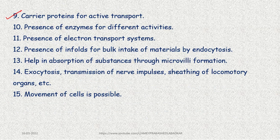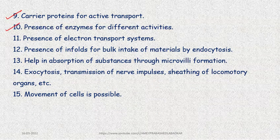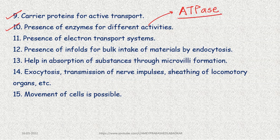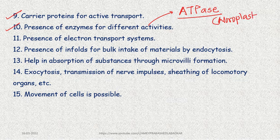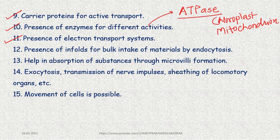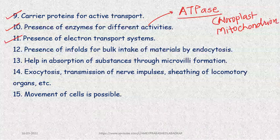Carrier proteins are present for active transport. Other types of enzymes, particularly ATPases, are involved. These are important for the synthesis of ATP, which we get from chloroplasts and mitochondria — present in the membranes of both these organelles.